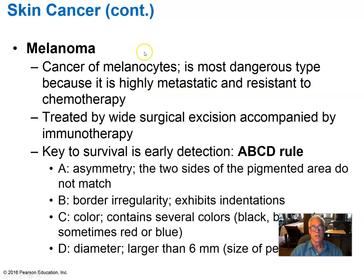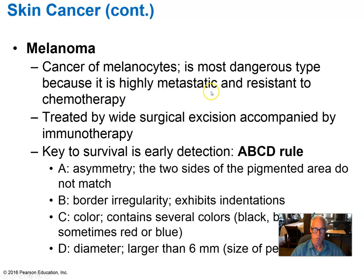Melanomas are a different animal altogether. When melanocytes in the basal layer of the epidermis are transformed by ultraviolet light, they produce a very aggressive growing cell type. It's very important to detect melanomas early before they spread, because once they spread they're much harder to eradicate. A metastatic melanoma — where tumor cells have spread to other parts of the body — is a very dire situation indeed.